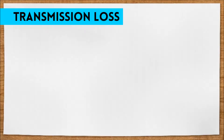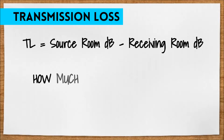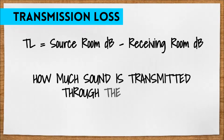Transmission loss is the difference in decibels between a source room and a receiving room. So basically, how much sound is a wall, assembly, or material letting through to the next space? How much is being transmitted?